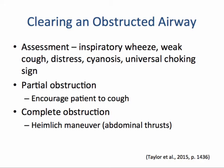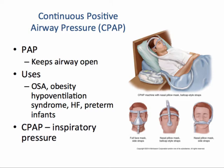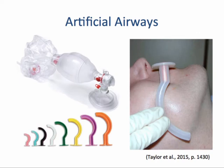To clear a partial obstruction, encourage the patient to cough. To clear a complete obstruction, you may have to perform the Heimlich maneuver or abdominal thrusts. Individuals with obstructive sleep apnea, obesity hypoventilation syndrome, and heart failure may require positive airway pressure to keep the airway open. Continuous positive airway pressure works by continually introducing pressure to maintain an open oro and nasopharynx in order to prevent obstruction.